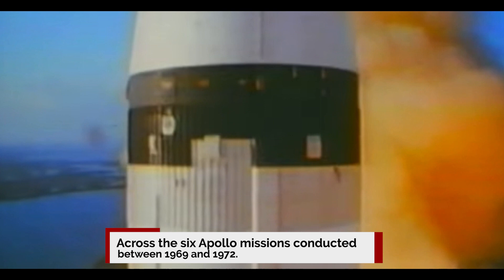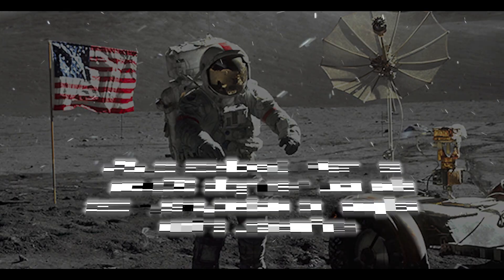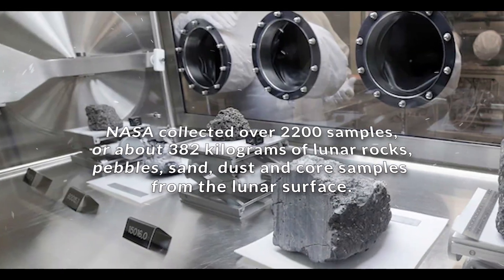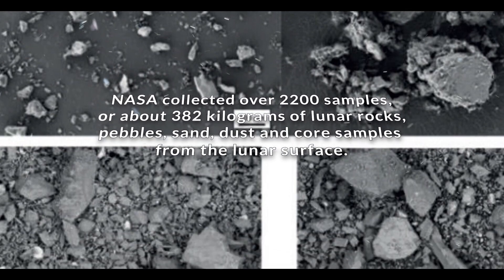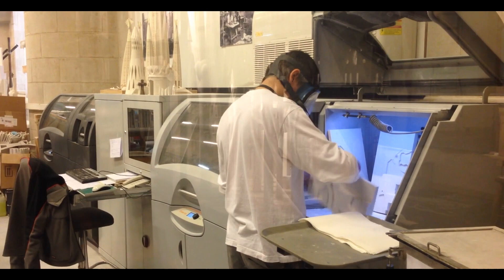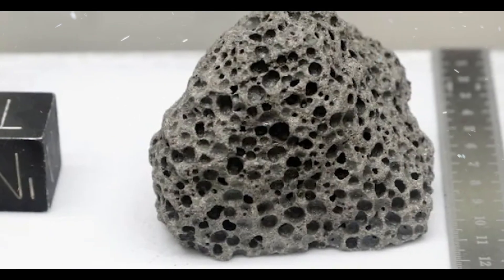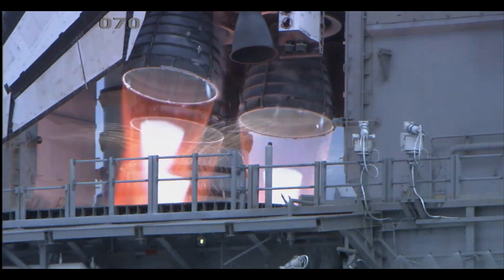Across the six Apollo missions conducted between 1969 and 1972, NASA collected over 2,200 samples, or about 382 kilograms, of lunar rocks, pebbles, sand, dust, and core samples from the lunar surface. Even today, NASA is studying the samples from the Apollo missions and recently unsealed one of its remaining samples in preparation for the Artemis mission to the moon.